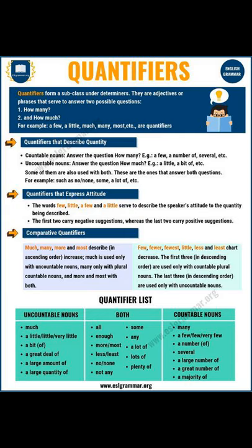Quantifiers that describe quantity include a little, none, a few, etc. Some of these are used only with countable nouns — nouns that answer the question 'how many' — for example: a few, a number of, several. Others are used only with uncountable nouns — nouns that answer the question 'how much' — for example: a little, a bit of.